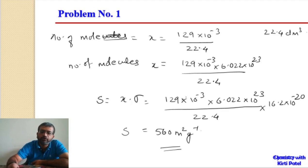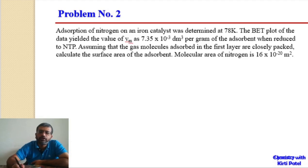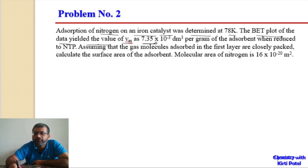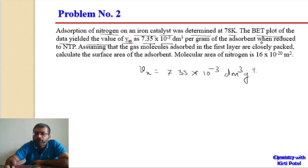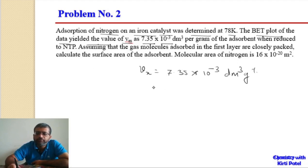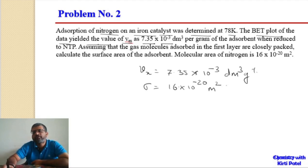Problem 2: Adsorption of nitrogen on an iron catalyst was determined at 78 K, and the BET plot of the data yielded Vm = 7.35 × 10⁻³ dm³ per gram of adsorbent when reduced to NTP. Assuming the gas molecules adsorbed in the first layer are closely packed, calculate the surface area of the adsorbent. The molecular area of nitrogen is given as σ = 16 × 10⁻²⁰ m².